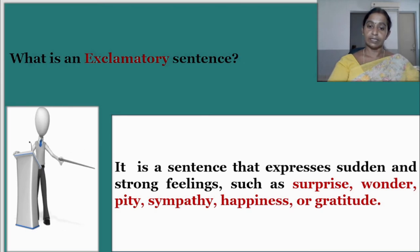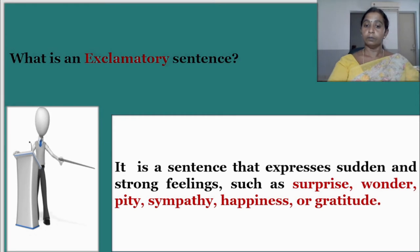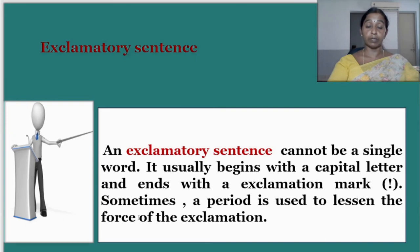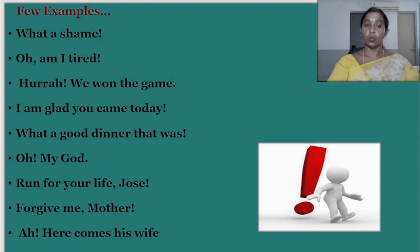What is an exclamatory sentence? It is a sentence that expresses sudden and strong feelings such as surprise, wonder, pity, sympathy, happiness, or gratitude. An exclamatory sentence usually begins with a capital letter and ends with an exclamation mark; sometimes a period is used to lessen the force of exclamation. Examples: 'What a shame!' 'I am tired.' 'Hooray, we won the game!' 'I am glad you came today.' 'What a good dinner that was.' 'Oh my God!' 'Run for your life!' 'Forgive me, mother.' 'Ah, here comes his flight.'